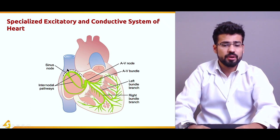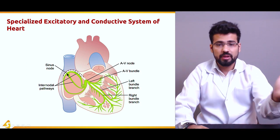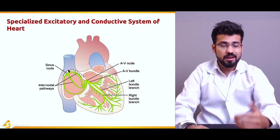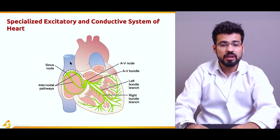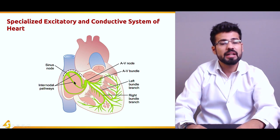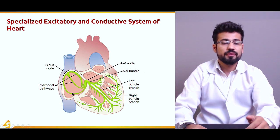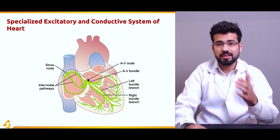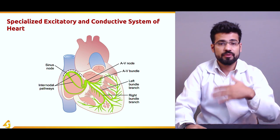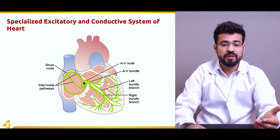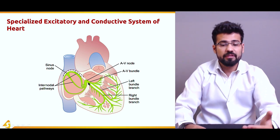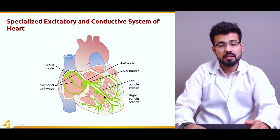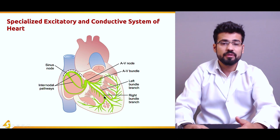The SA node is present toward the posterior lateral wall of the right atrium, just below and toward the lateral side of the superior vena cava. From the SA node, impulses shoot down into three sub-branches of the internodal pathways — anterior, middle, and posterior. This is followed by the AV node, which causes a delay. After the AV node, transmission moves toward the AV bundle, and from the AV bundle down toward the left and right bundle branches of the Purkinje fibers.